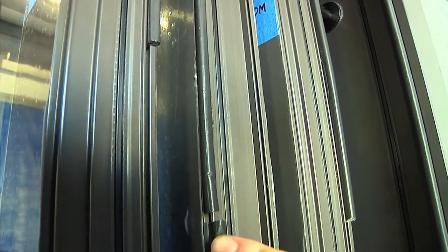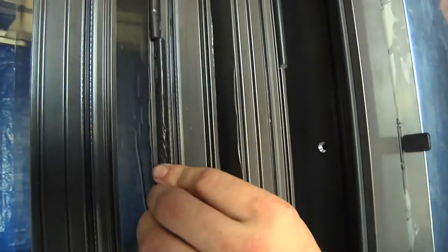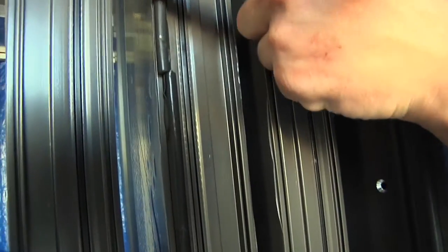This is the incorrect method to installing the weather stripping. You want the thicker part of the weather stripping to face the corner of the style.